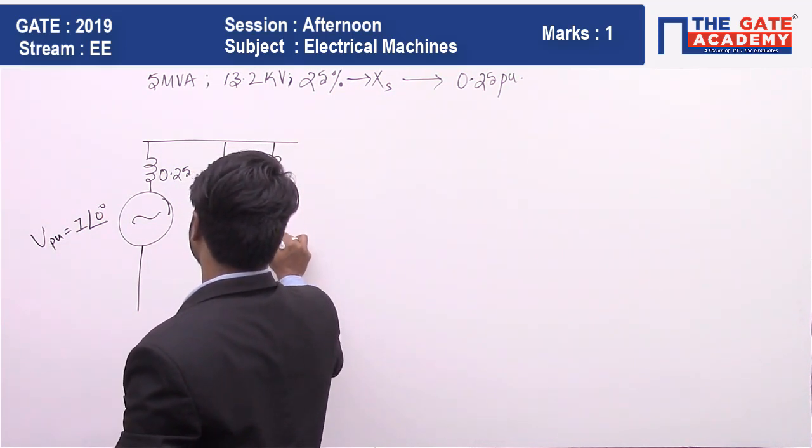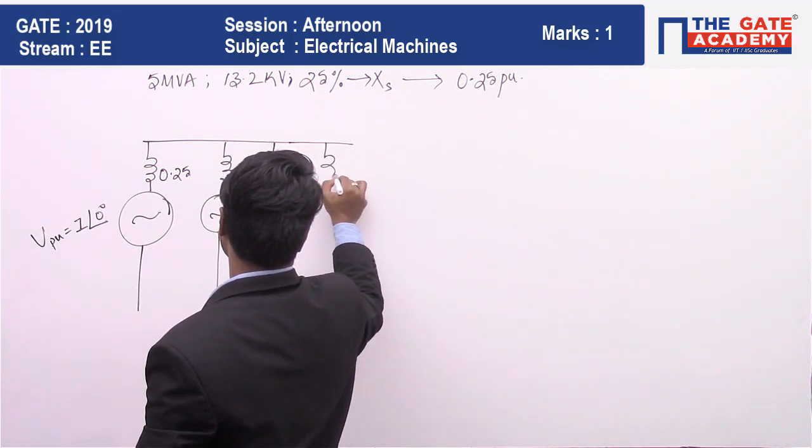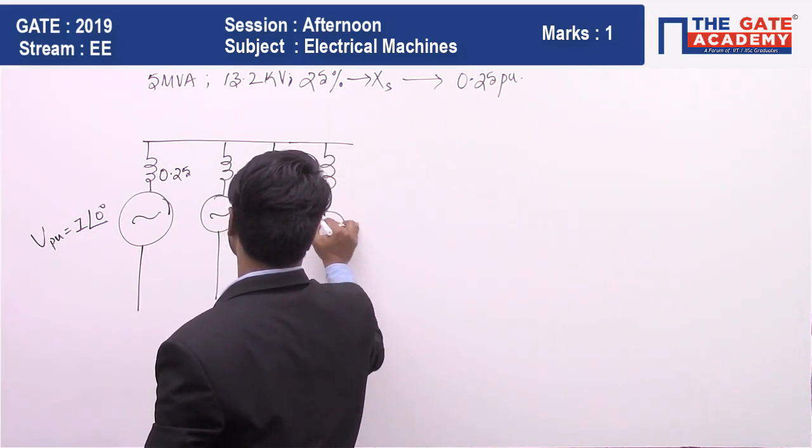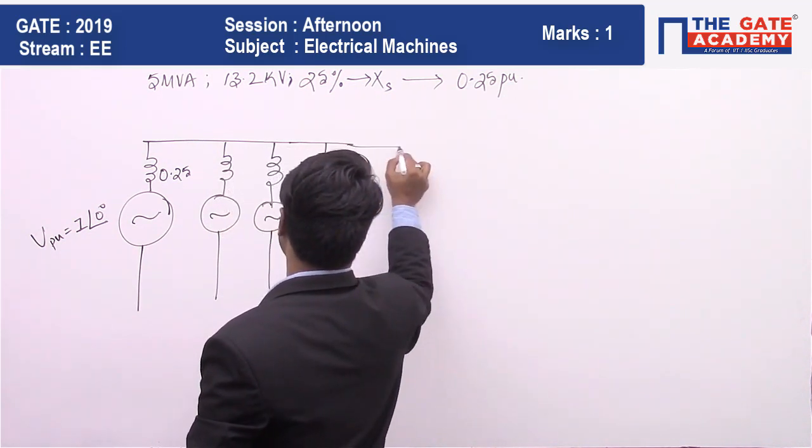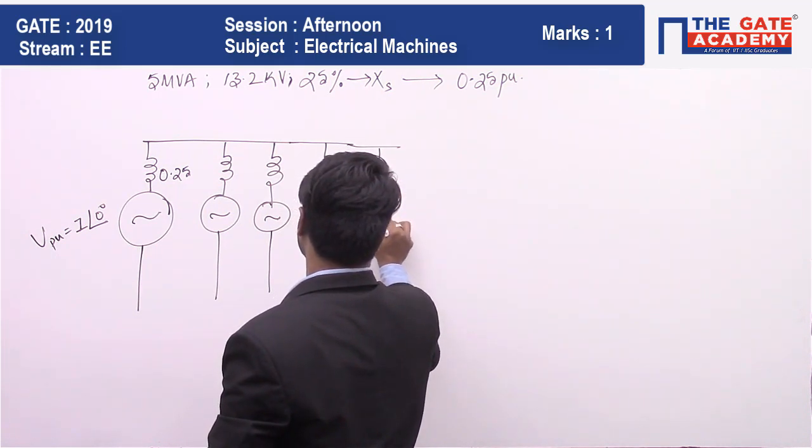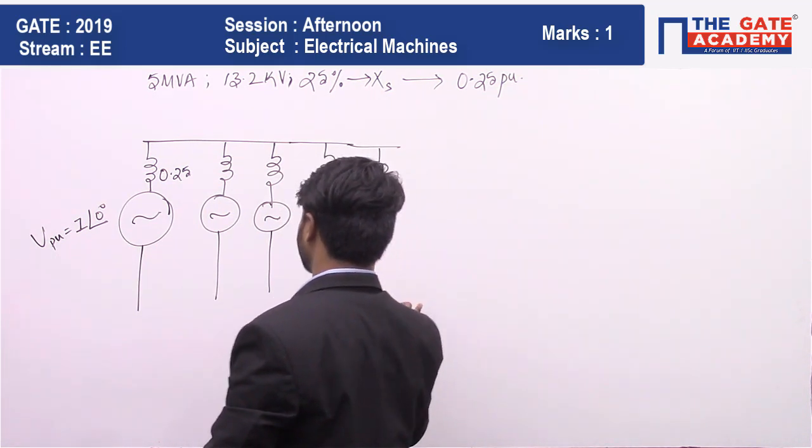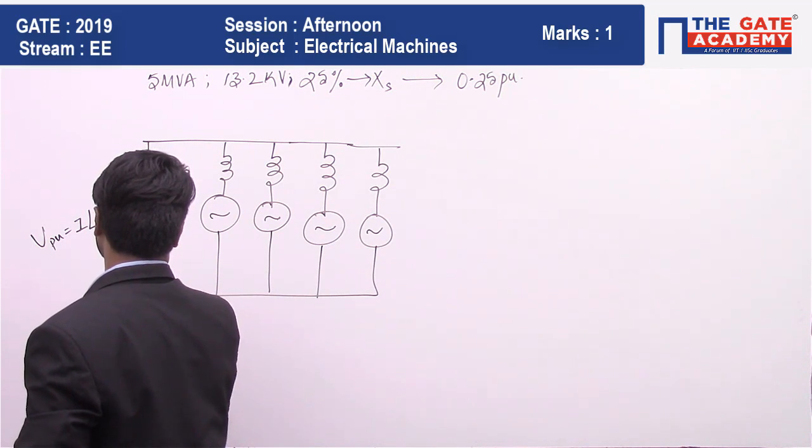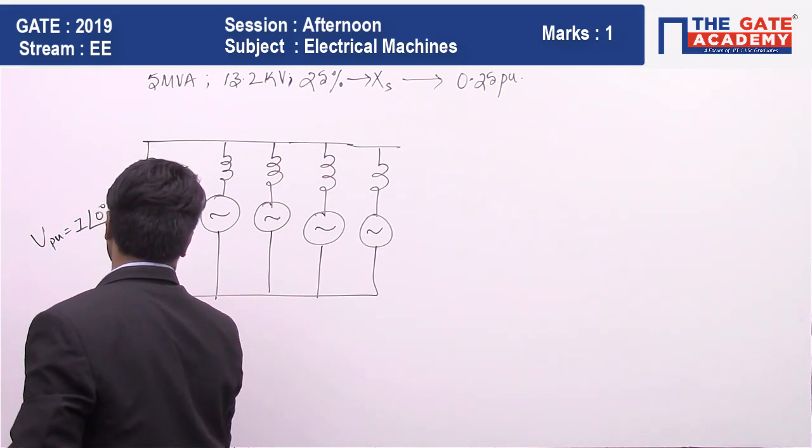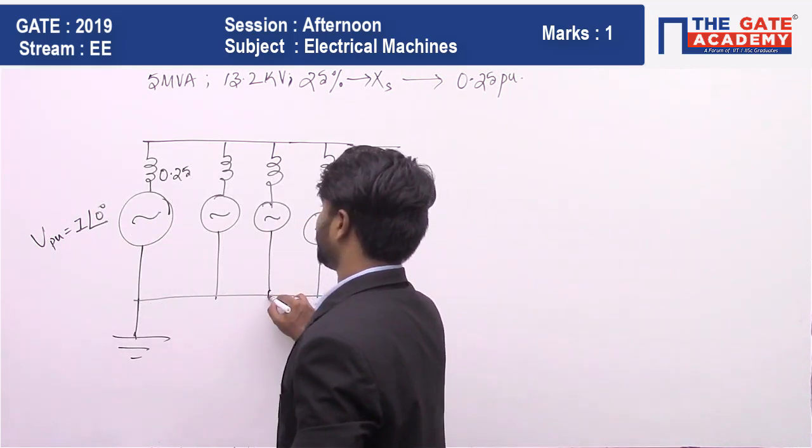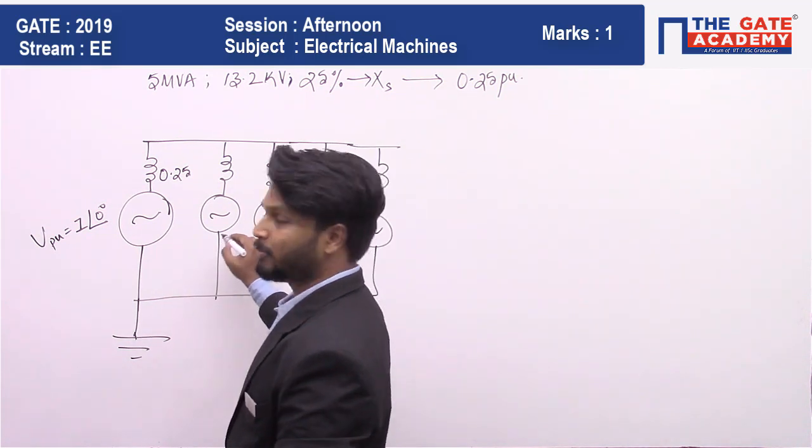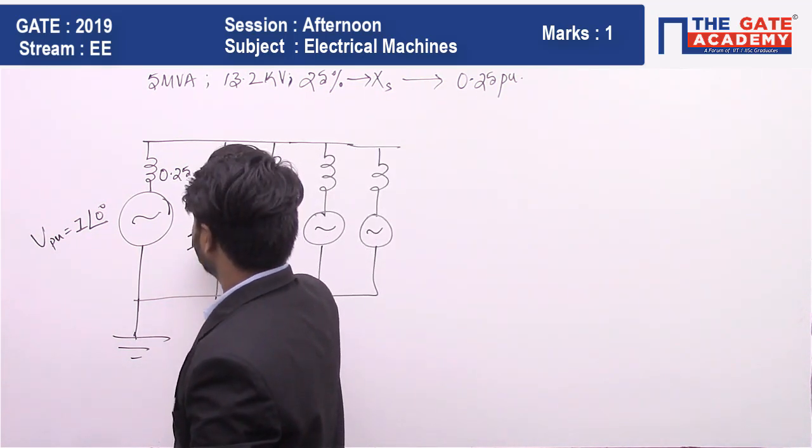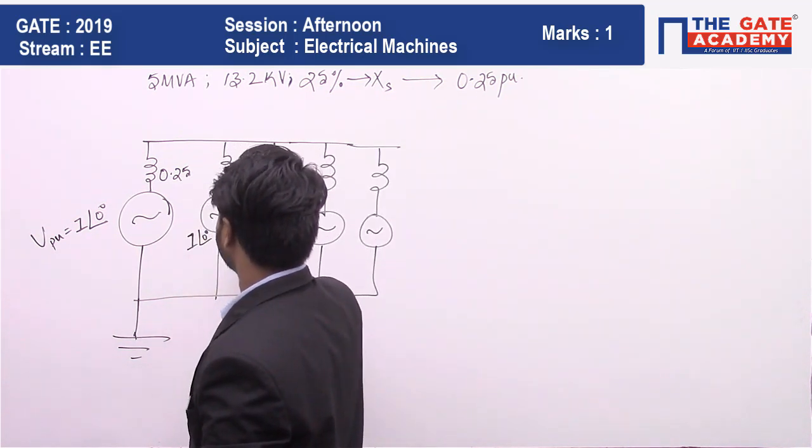Two, three, four, and five. Drawing this is not necessary, just to give an idea to you. I'm just drawing the circuit diagram. These are the five alternators in parallel, each having 1 per unit at angle zero as voltage.